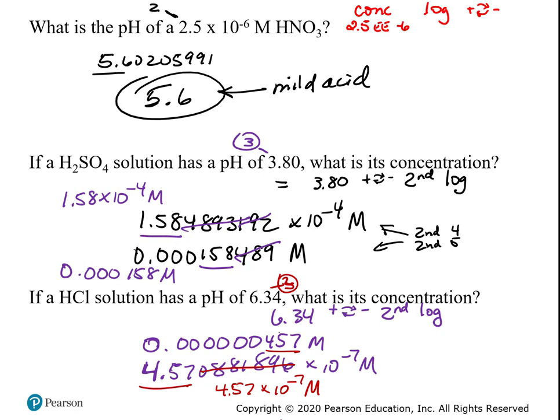If you hit second and 4, it puts this into normal form with no exponents at all. Second and 5 is scientific notation. Those are really the two to remember if you want to flip back and forth from scientific notation to normal expanded form.